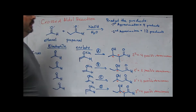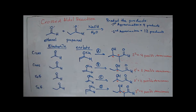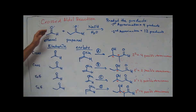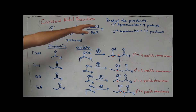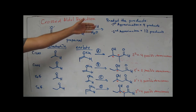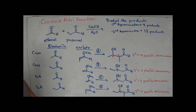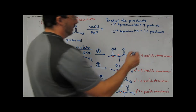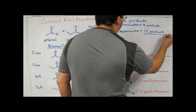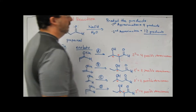So our second approximation is that we're actually going to produce 12 products. In terms of synthetic efficiency — taking starting materials to produce one product — you can see this is going to give us a pretty complex mixture.